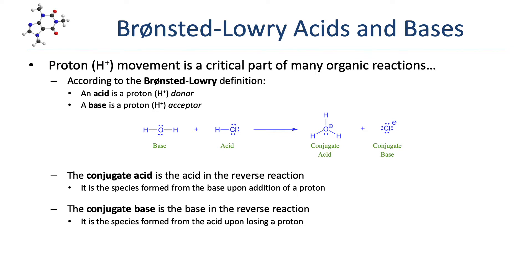The conjugate acid and conjugate base for any species are actually independent of the specific reaction involved. Another way to look at this is that the conjugate acid is the species formed from the base upon addition of a proton. When water accepted a proton, it became hydronium — hydronium is the conjugate acid. Similarly, the conjugate base is the species formed from the acid upon losing a proton. HCl loses a proton and becomes chloride, the conjugate base of HCl.